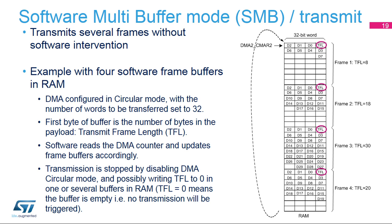The last mode is software multi-buffer mode, or SMB. This mode also uses the DMA, and several SWP frames can be handled without software intervention. In this example of transmission with four frame buffers in RAM, 32 bytes are always reserved for each frame regardless of the payload size. The DMA must be configured in circular mode, and the number of words to be transferred must be set to 32. As in SSB mode, the first byte of each buffer is used to code the frame length — this is the TFL field. Software can read the DMA counter and update each frame buffer accordingly, and three frames can be transmitted without software intervention.